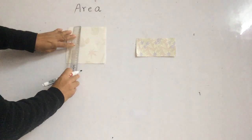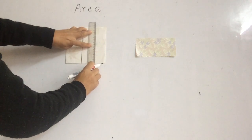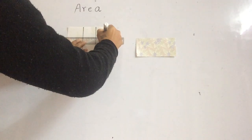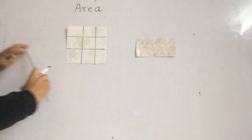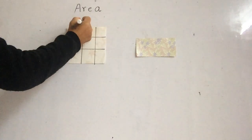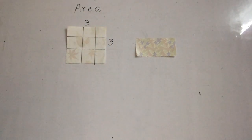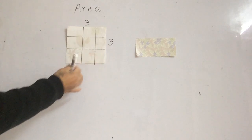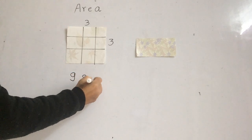Let's see the square box here. We have one, two, three across and one, two, three down. So this area is 9 square centimeters. You can count the boxes: one, two, three, four, five, six, seven, eight, nine. So the area is 9 square centimeters.